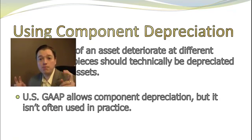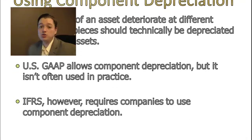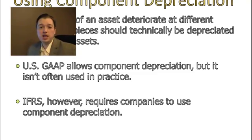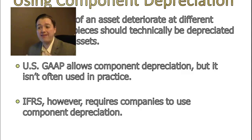Under US GAAP, we're allowed to do component depreciation — where we look at the different components and depreciate each one separately — but it's not very often used. We can, we just don't. Under IFRS, however, it's required. So if your piece of equipment has a conveyor belt that will last about two years, some mechanical arms that will last 10 years, and some bins and other pieces that will last 20 years, then you really will treat this as three separate assets. The methods are the same — straight line, double declining balance, etc. — it's just the fact that we have to break it down into different components that makes it different.